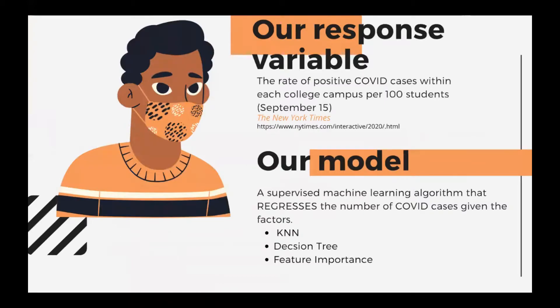For our response variable, we are measuring the number of COVID cases at each college campus per 100 students, which gives us a number of COVID cases relative to the size of each school. We took that from September 15th to capture COVID numbers right after the fall term started. The algorithms we run are regressors — specifically the KNN and decision tree algorithms — and for each model we run an analysis of feature importance.